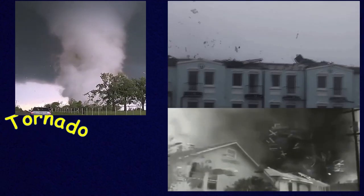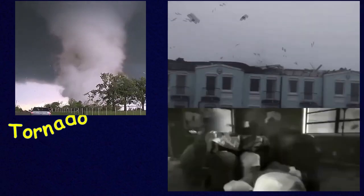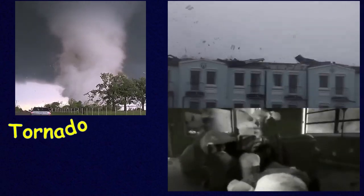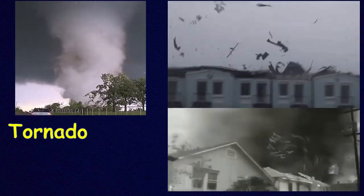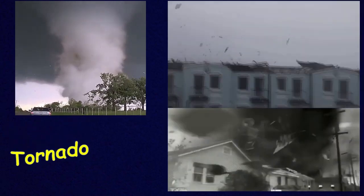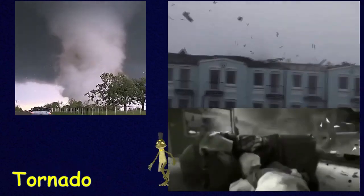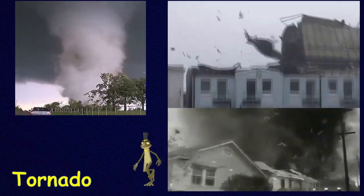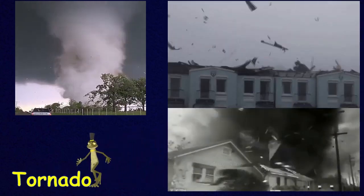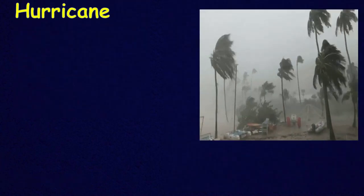When it touches the ground it becomes a tornado. You can see here it picks up dust, debris, animals, cars, rocks, trees — anything. Tornadoes can become even stronger than hurricanes, and they are so unpredictable.